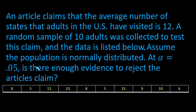What we have here is an article claiming that the average number of states that adults in the U.S. have visited is 12. So this is a statement about the entire population and this is going to be our claim that we are going to test. A random sample of 10 adults was selected to test this claim and the data is listed below. Assume the population is normally distributed. At alpha equals 0.05, is there enough evidence to reject the article's claim?